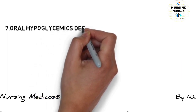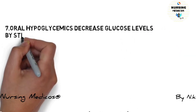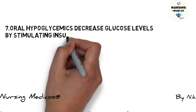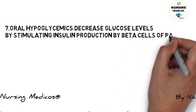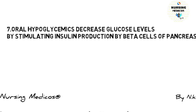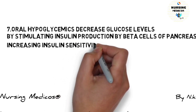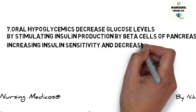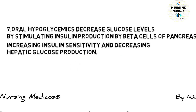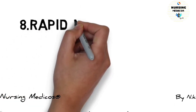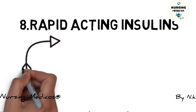Seventh one: oral hypoglycemic agents decrease glucose levels by stimulating insulin production by the beta cells of the pancreas, increasing insulin sensitivity, and decreasing hepatic glucose production.